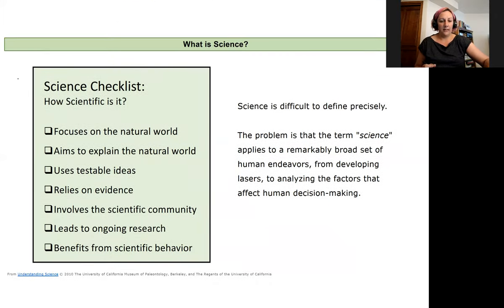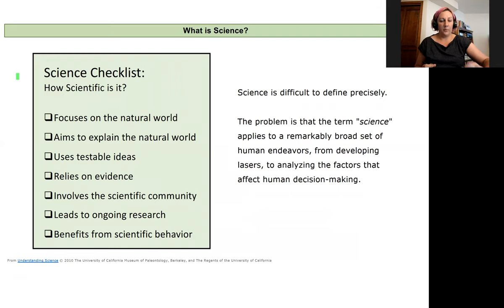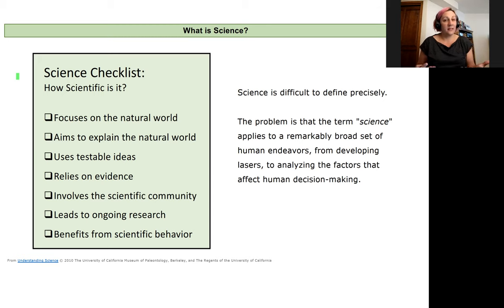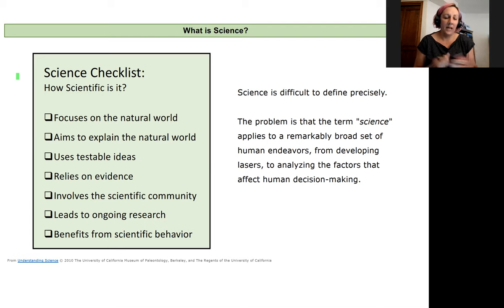I think it's important to start at what is science and what is scientific. I love this checklist of 'how scientific is it,' because like a lot of things we'll discuss in this class, there's kind of a spectrum. Since science is difficult to define very precisely, we have this checklist to think through how scientific something is.